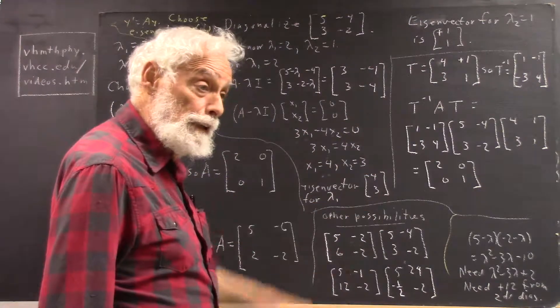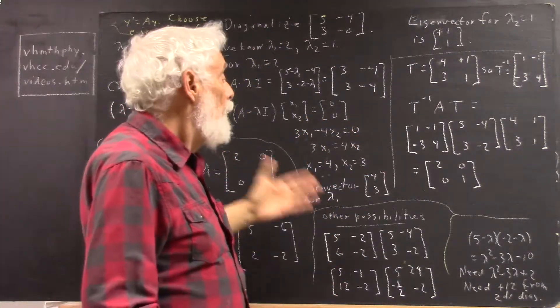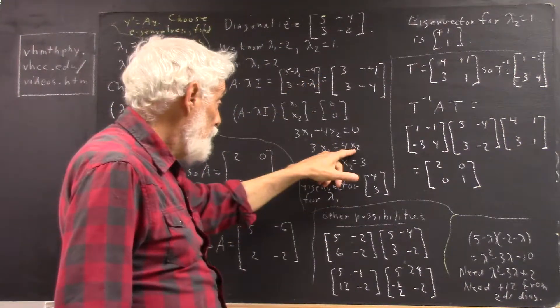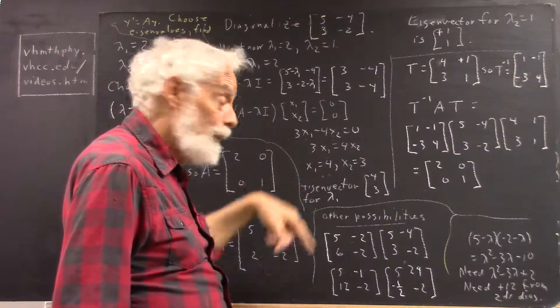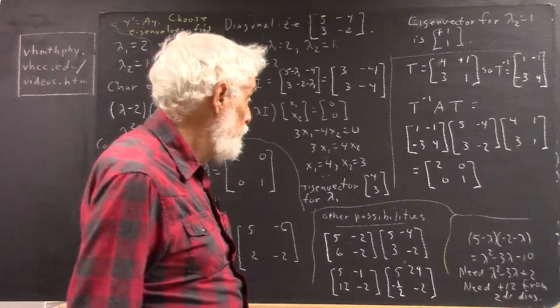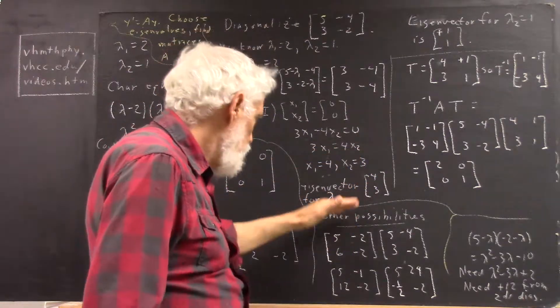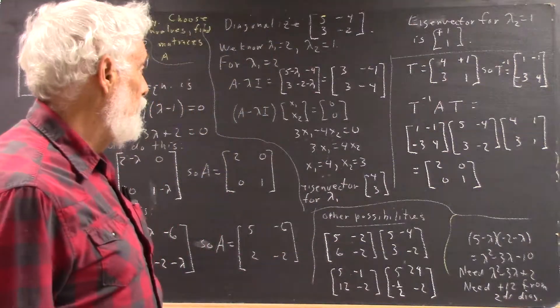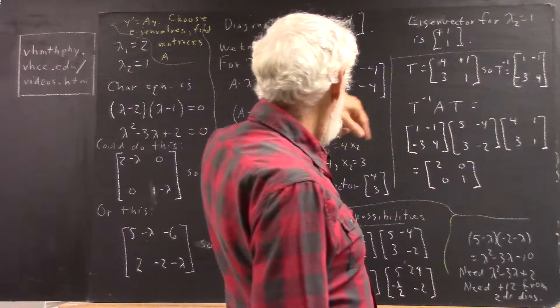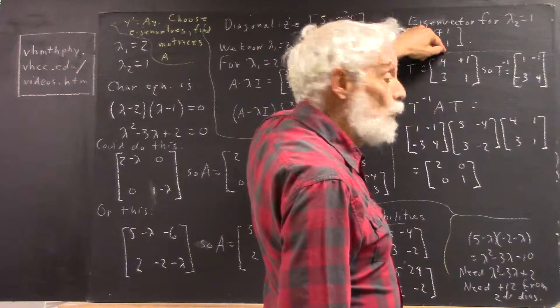If you got the 4 thirds 1, well, that's just 3 times... Well, 3 times the 4 thirds 1 that you would get if you let X2 equal 1 here, gives you the 4 3. So this is just a multiple of any other solution to these equations. And you should make sure you understand why that's so. Well, in any case, there's our eigenvector for lambda 1. Eigenvector for lambda 2 is 1, 1.